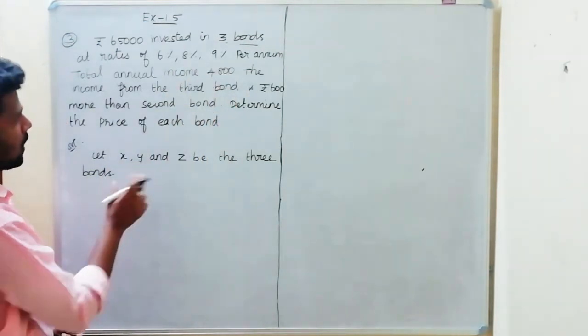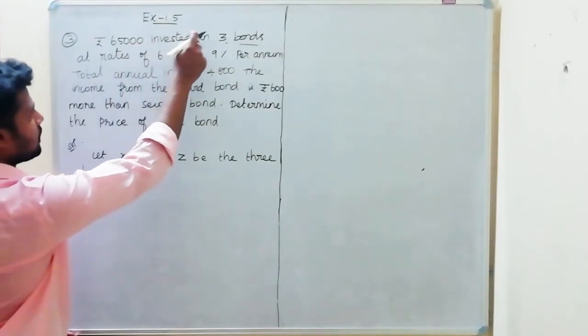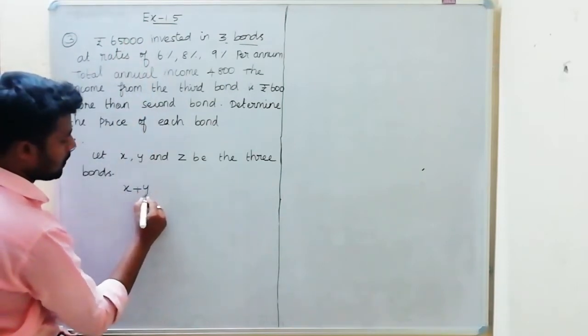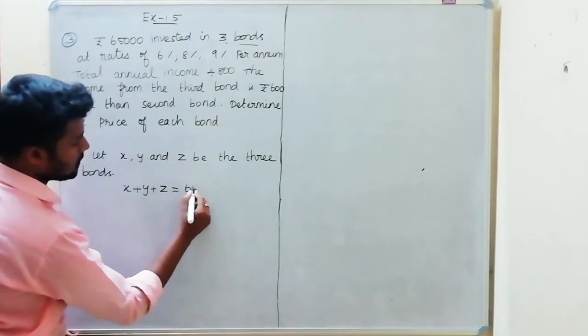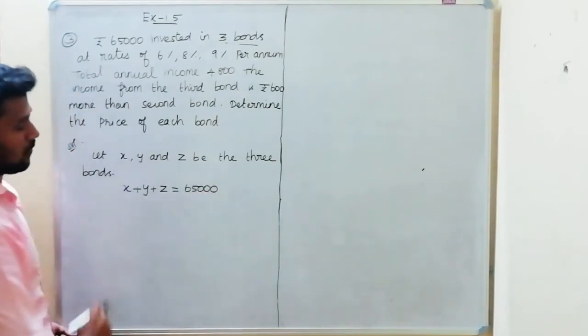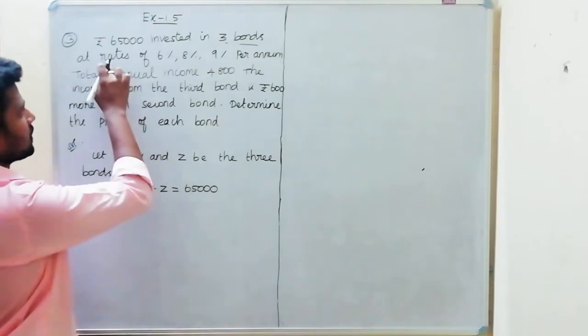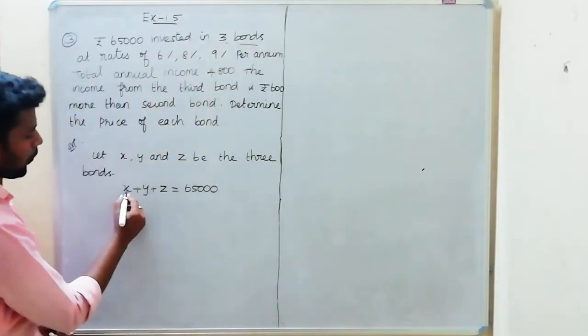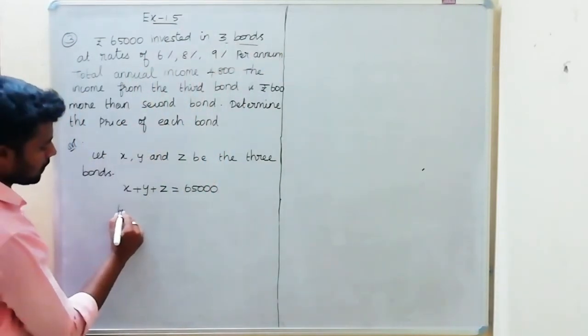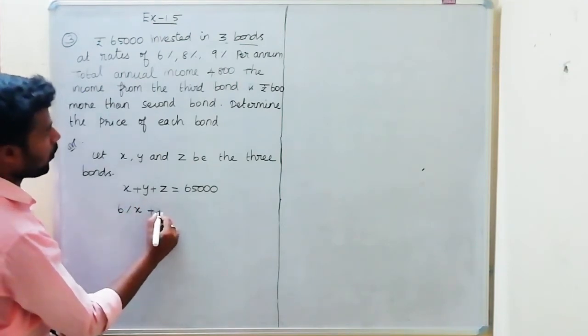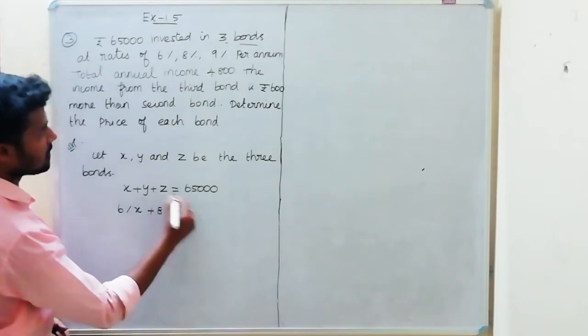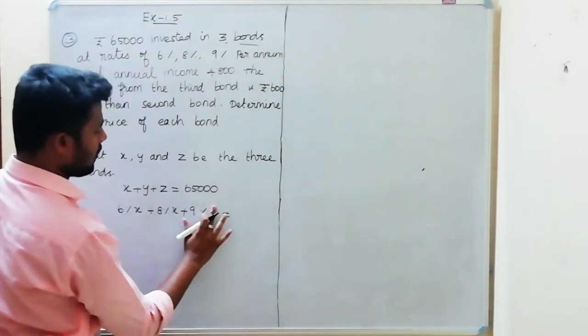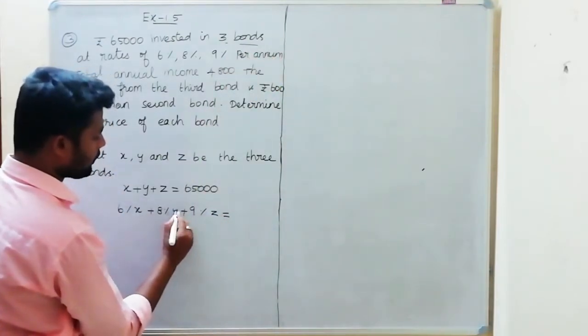First equation: 65,000 invested in 3 bonds, so x plus y plus z is equal to 65,000. This is the first equation. At the rate of 6%, 8%, 9% per annum.